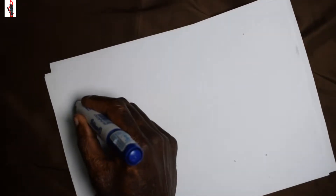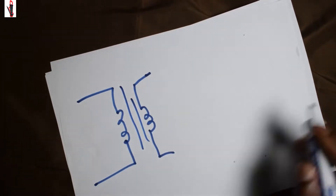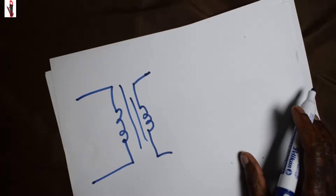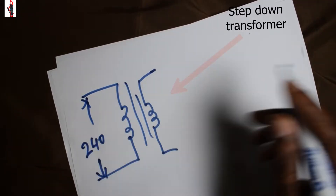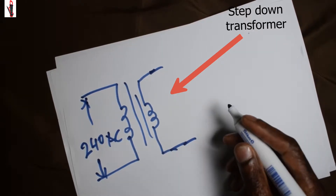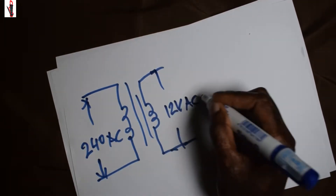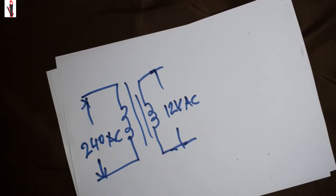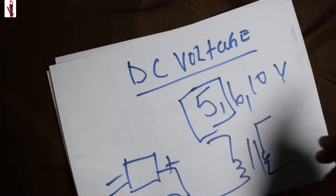Let's have a clear picture of a transformer. This is our transformer and it will be a step-down transformer. We will have 240 volts AC input, and because it is a step-down transformer, we will have 12 volts output — but still AC. Remember, we need 5 volts.